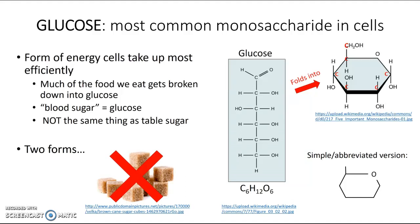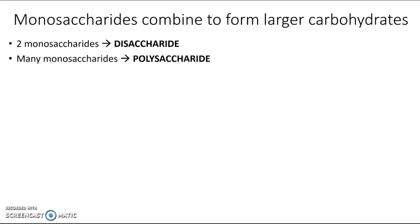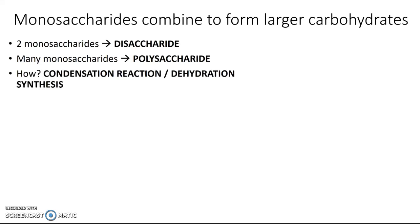So that's what you need to know about monosaccharides. To build larger carbohydrates, we combine monosaccharides. Putting two together gives a disaccharide — 'di' being the prefix for two. Putting many together gives a polysaccharide — 'poly' meaning many. The reaction we use to bind them together is the condensation reaction, also called dehydration synthesis.